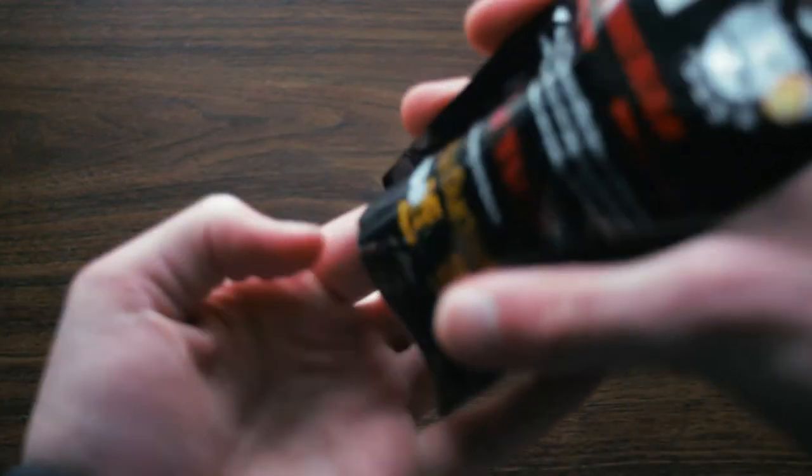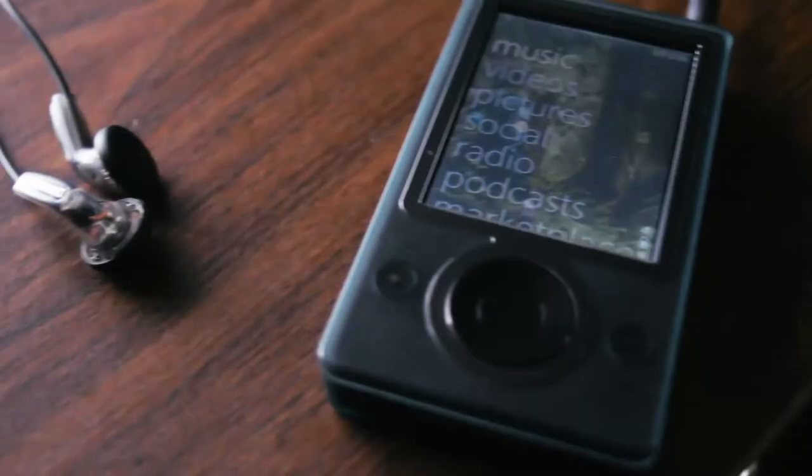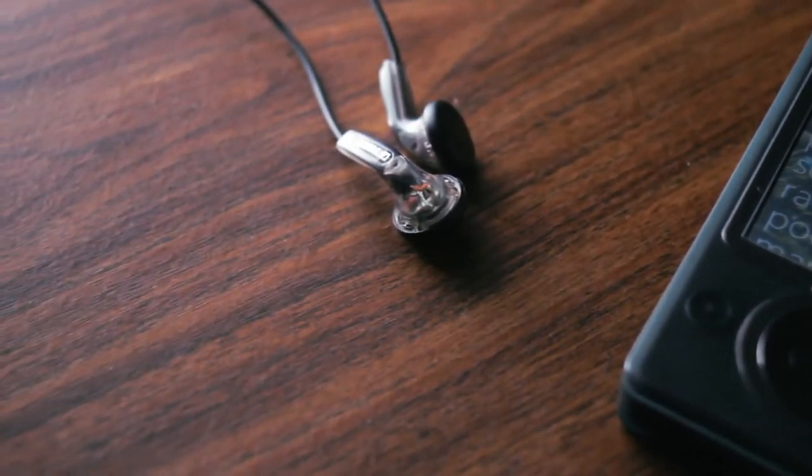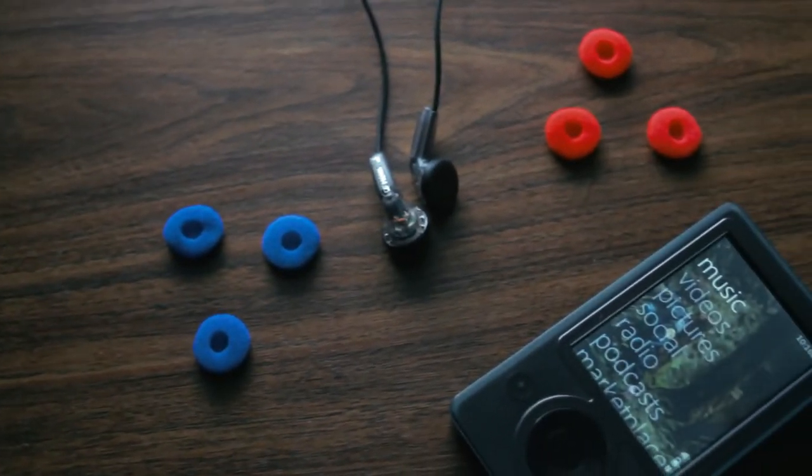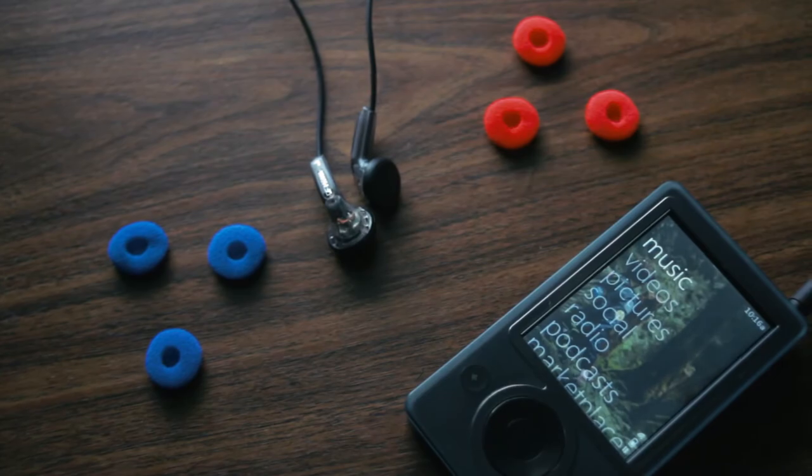The earbuds themselves are made out of a hard transparent plastic that actually feels like it'll hold up pretty well. They also include some color-coded foam covers to help them grip in your ears a little bit better.